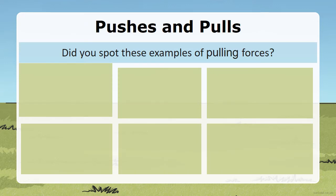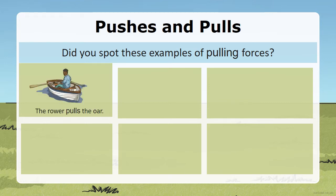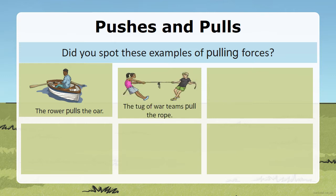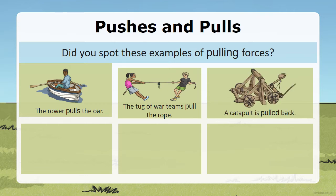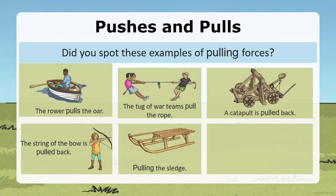Pushes and pulls — did you spot these examples of pulling forces? Let's look at them. First, rowing a boat with an oar — that is pulling. The tug of war team — you pull a rope. A catapult — it is pulled back. A bow and arrow — the string of the bow is pulled back. Pulling a sled, and then the bell rings and you pull the rope.